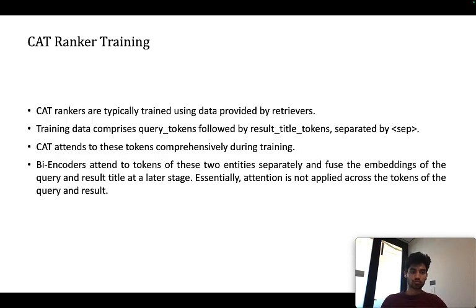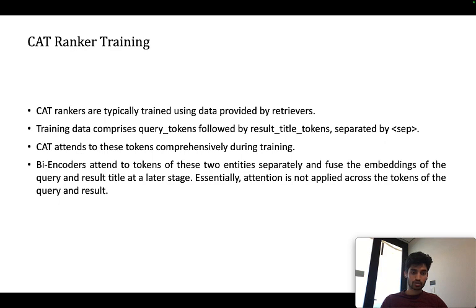Cross-attention transformer-based rankers are typically trained using data provided by retrievers. Training data usually comprises query tokens followed by result tokens separated by a special token. CAT attends to these tokens comprehensively during training. Bi-encoders attend to these tokens separately and fuse the embeddings of query and result title at a later stage. Essentially, attention is not applied across the tokens of the query and result.